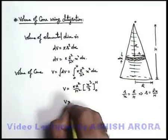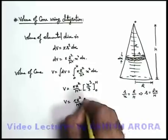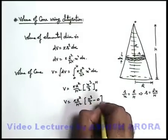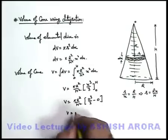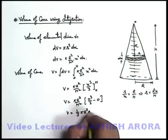Now we put the limits, we'll get V = πR²/h² times h³/3 minus zero. You can see the volume finally we're getting is 1/3 πR²h.